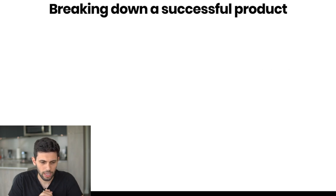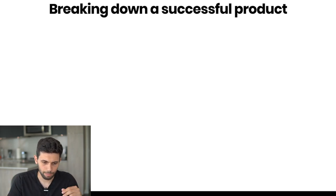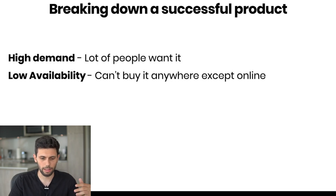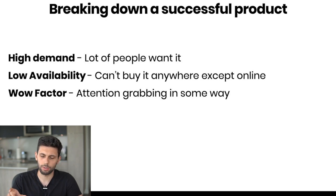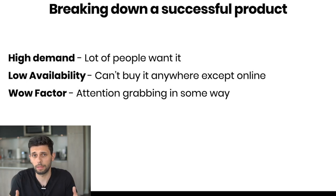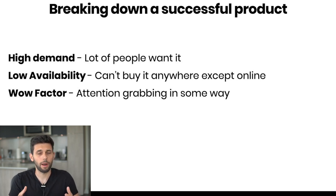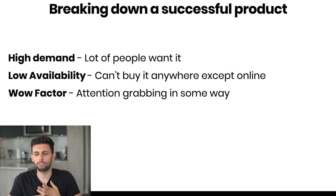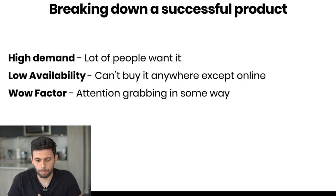Let's start breaking down what a successful product actually looks like. First off: high demand — a lot of people want it. Simple. Second: low availability — that's the supply and demand thing. Especially products you can't find anywhere except online. If you can go to Walmart or similar stores and find the product there, most likely people might do that instead of buying it online. The best way is to sell a product that you can't find anywhere except online — usually newer products that you can build brands around. Third: a wow factor — it's attention-grabbing in some way.